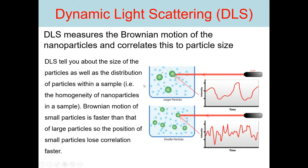What information do we get from DLS? Dynamic light scattering basically tells us about the size of the particles as well as the distribution of particles within a sample. It tells us about the homogeneity of the nanoparticles in a sample — if you want to know how homogeneous a sample is, that can be done with the help of dynamic light scattering.